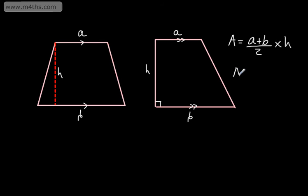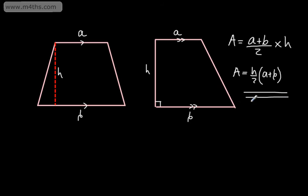You might see this written as H over 2 times (A plus B). It really doesn't matter — it's going to give us exactly the same thing. You might see this bracketed off as well.